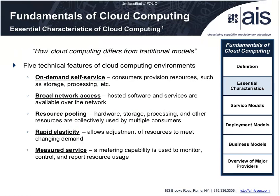How does cloud computing differ from traditional models? There are five essential characteristics. First, on-demand self-service: consumers are responsible for provisioning resources — you may receive a cloud instance with an OS installed, but you deploy applications and manage storage and processing. Second, broad network access: remote access to a cloud instance. Third, resource pooling: a single set of hardware and storage used by multiple consumers. Fourth, rapid elasticity: adjusting resources to meet changes in demand, such as scaling a web server under increased load. Fifth, measured service: metering resource usage, most notably used in billing.